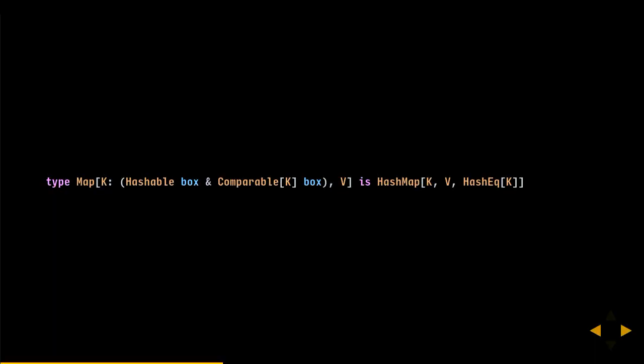An example of generics is the HashMap implementation — a generic type with two parameters, K and V, where K is constrained to be hashable and comparable to other objects of type K. The box keyword there is related to reference capabilities, which I'll get into shortly.